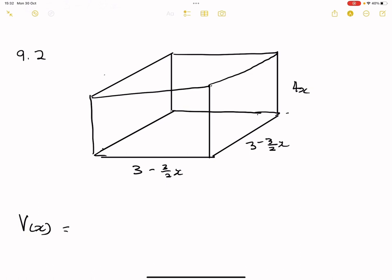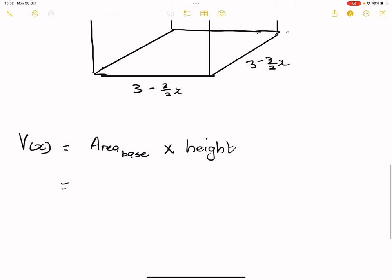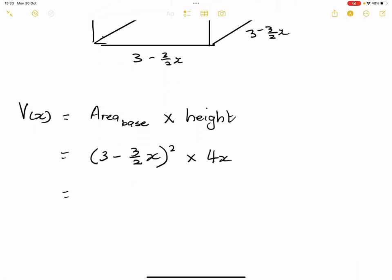The volume is going to be the area of the base multiplied by the height. The area of the base is our square — since the square has equal sides, that's (3 minus 3 over 2x) all squared, multiplied by the height which is 4x. Now let's try to simplify this.